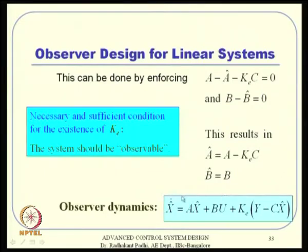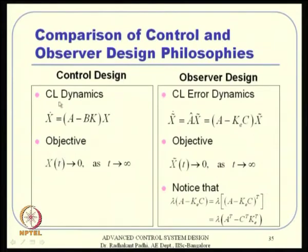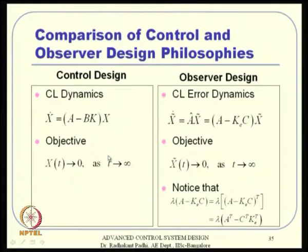The filter dynamics looks like linear system dynamics plus a Kalman gain times the innovation term. We saw a comparison between control design and observer design: the closed-loop dynamics for the control system is analogous to the closed-loop error dynamics for the observer. The objective for control is X → 0, and the objective for the observer is X-tilde → 0 — fairly similar objectives.